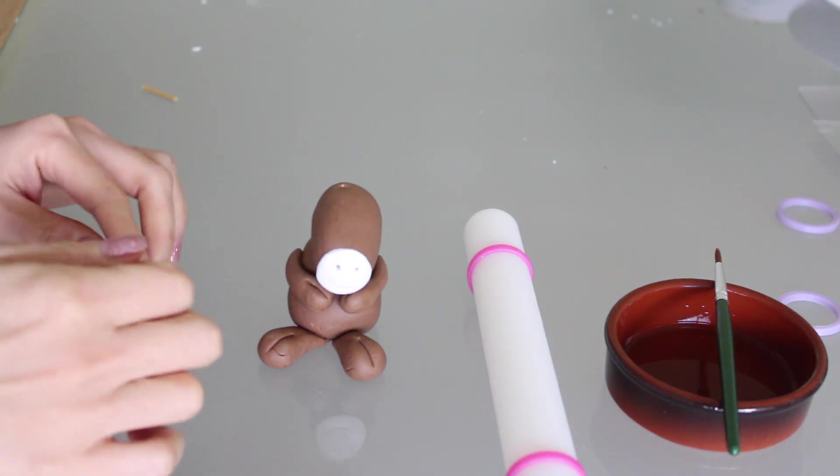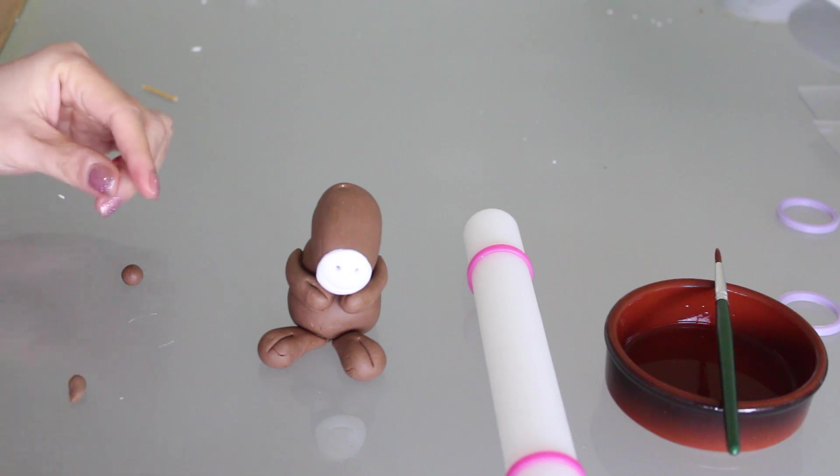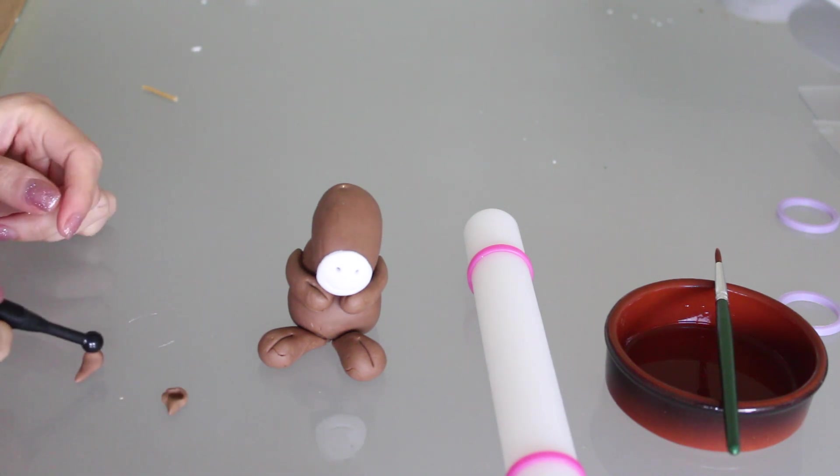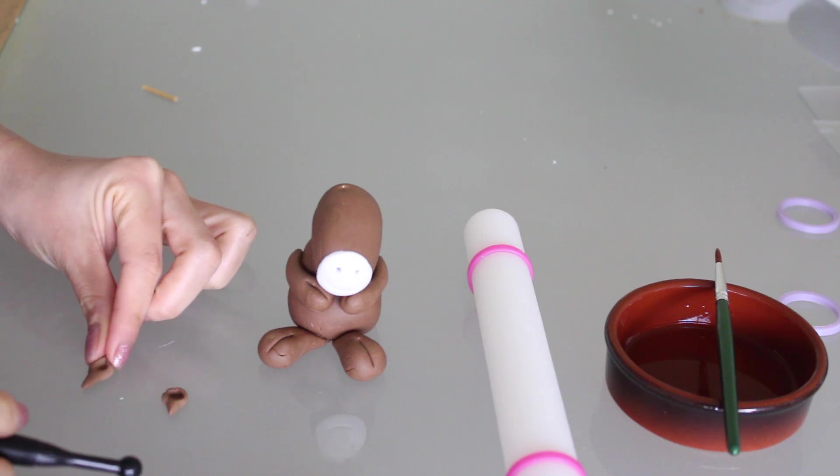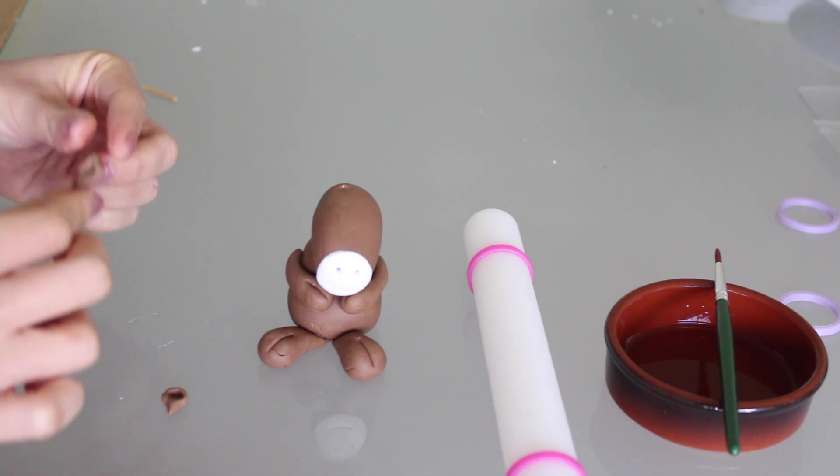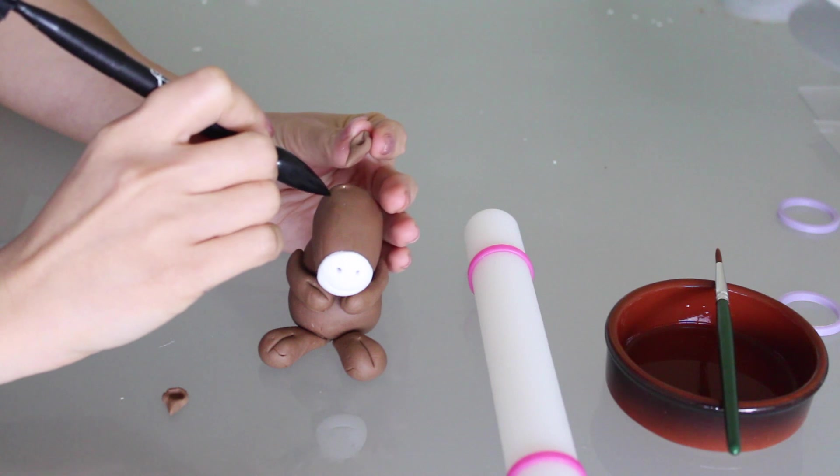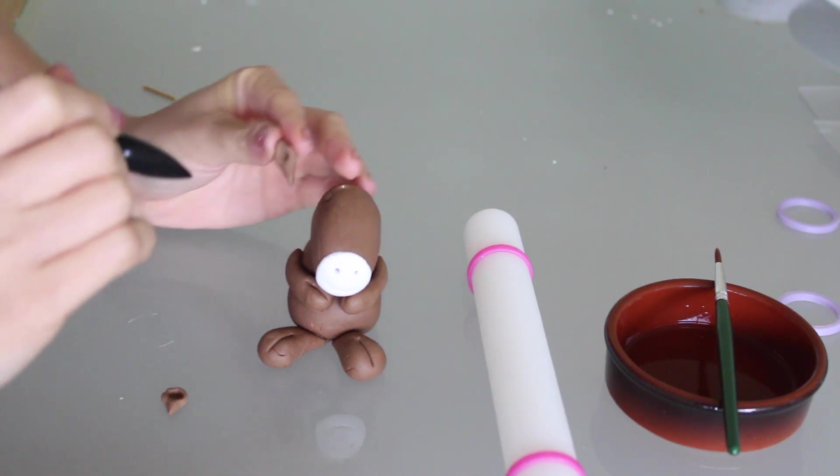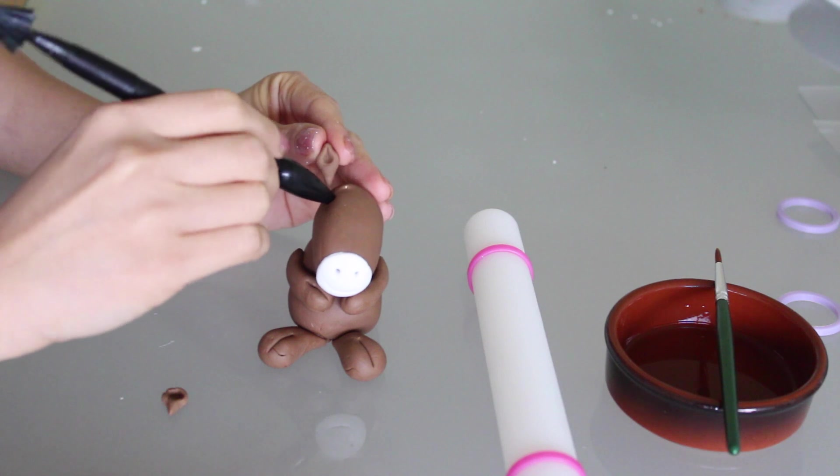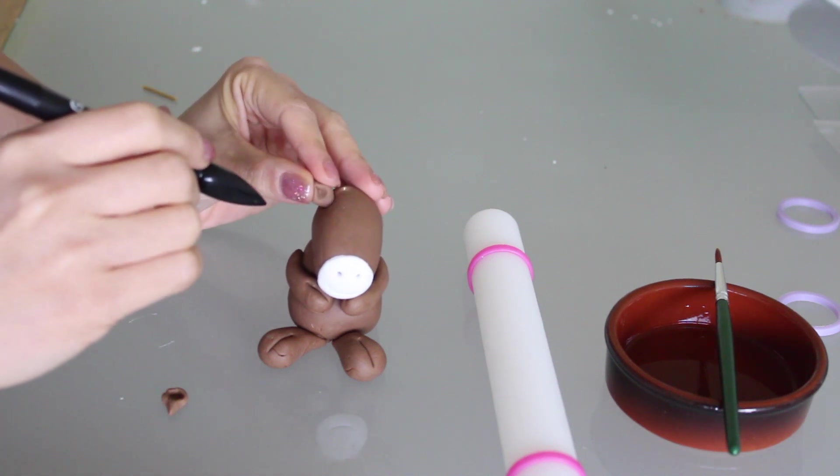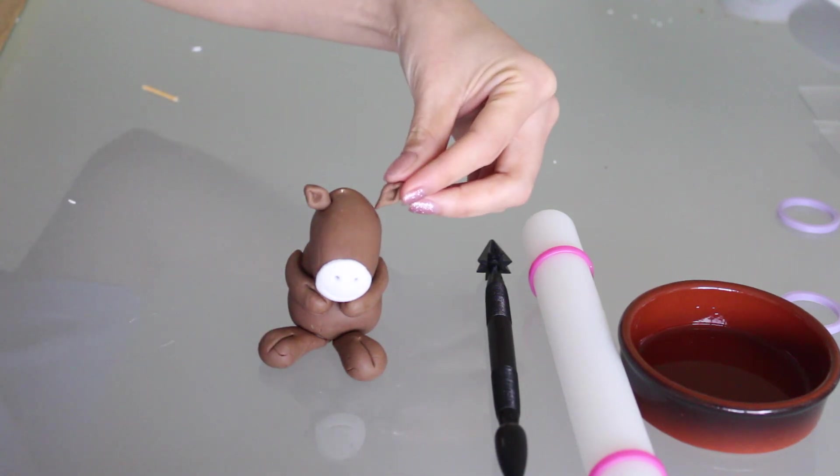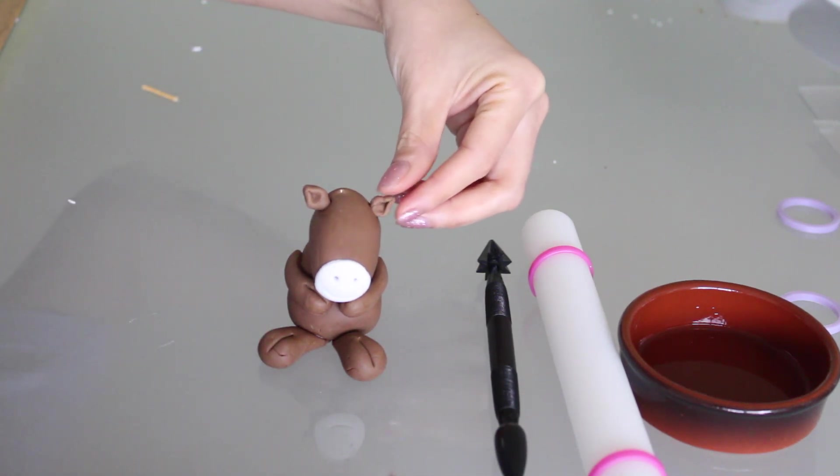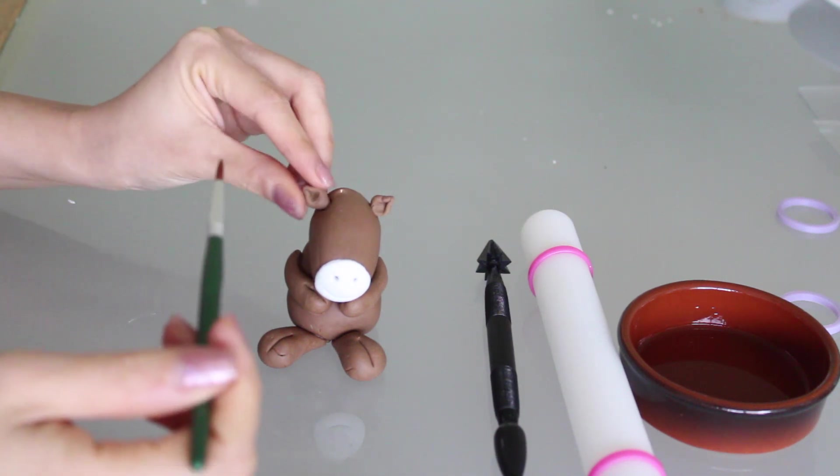To give the horse some ears, roll the remaining fondant balls into small teardrops. Then use the ball tool to flatten the fleshier part, while using your fingers to pull it into a tip. Create a hole big enough for the ear to be inserted into the head. Do the same for the other side. Brushing it with alcohol or water will help the ears to stay in position on the head.